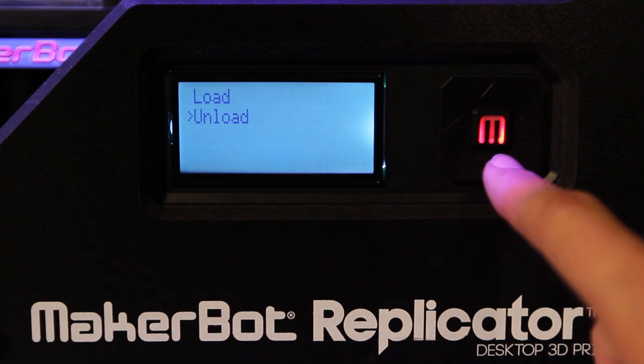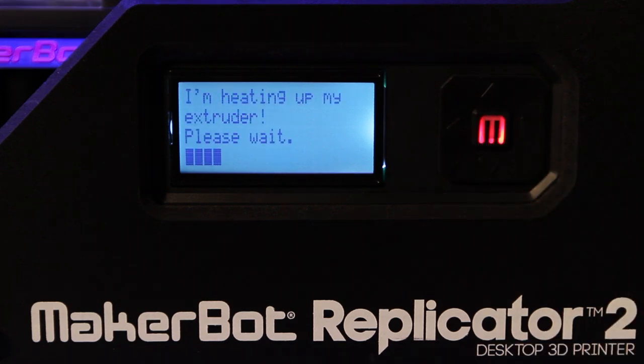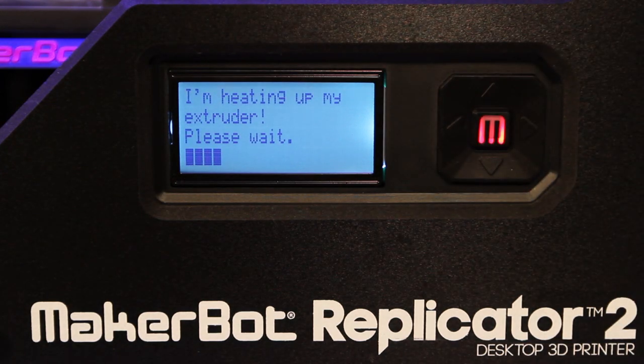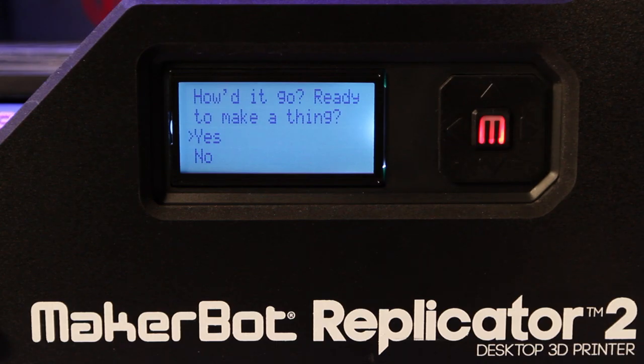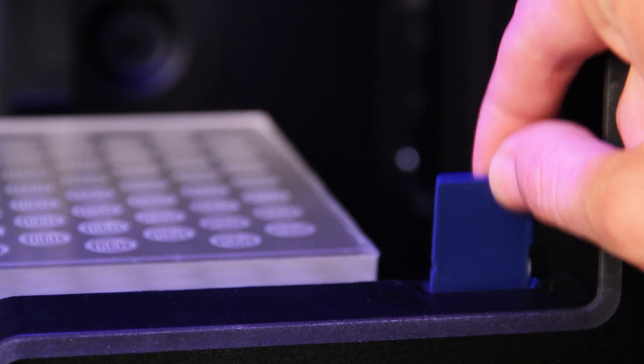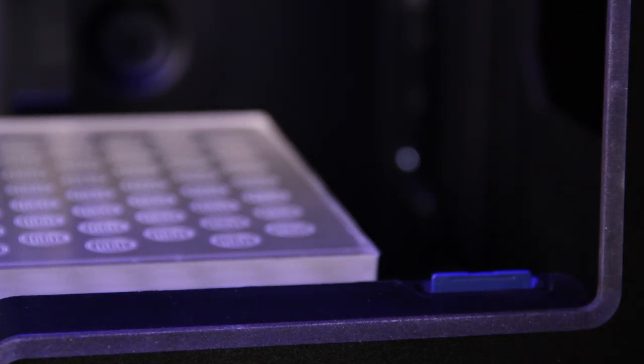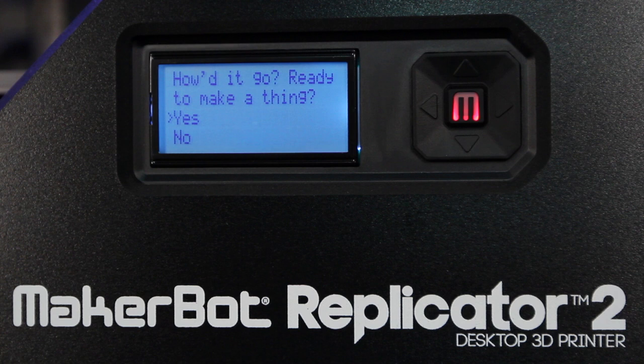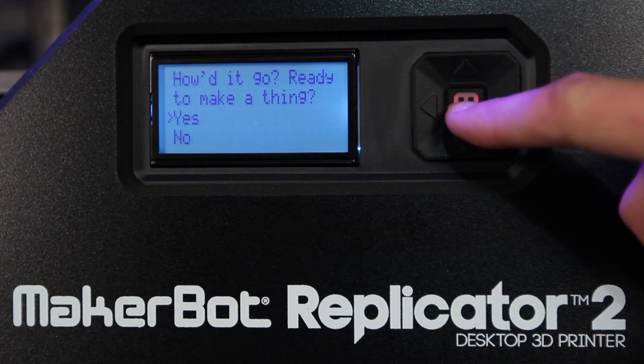This is also the screen where you'll be able to unload your filament when you're ready to try out a new color of MakerBot PLA filament. Now your MakerBot Replicator 2 desktop 3D printer will ask you if you're ready to make something. Insert the SD card, which can be found in your accessories bag, into the slot behind the keypad. If you've successfully leveled your platform and loaded filament into your extruder, answer yes, I am ready to make something.